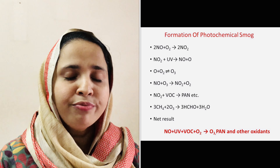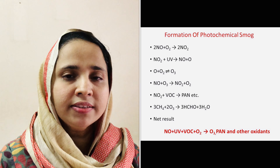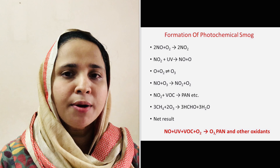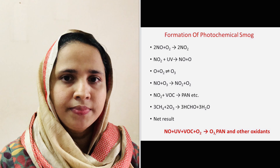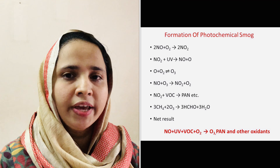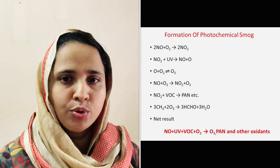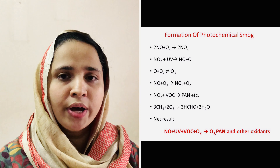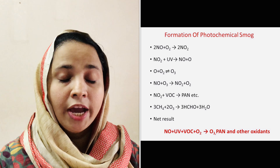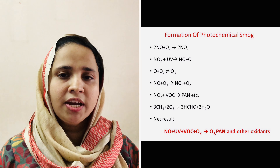Do you know how photochemical smog forms? When fossil fuels are burned, two kinds of pollutants are emitted into the earth's atmosphere: hydrocarbons and nitrogen oxides. At high concentration of nitrogen oxides, a photochemical chain reaction occurs in which NO is converted into NO2. Then NO2 photochemically decomposes into NO and a free oxygen atom. This reactive oxygen atom combines with O2 to form ozone.